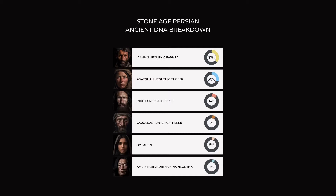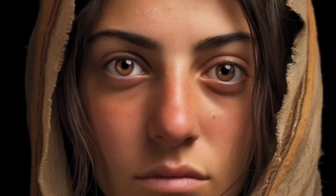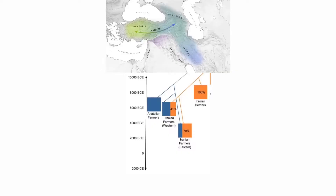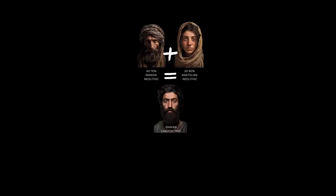But if we look closely at this breakdown, what we see is that around 30% of their DNA is Anatolian Neolithic farmer related. That's because around 8,000 years ago there was yet another migration. This time it was characterized by agriculturalists who originated in Anatolia, who migrated within the Iranian plateau.